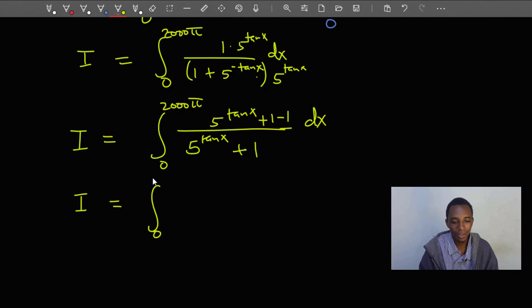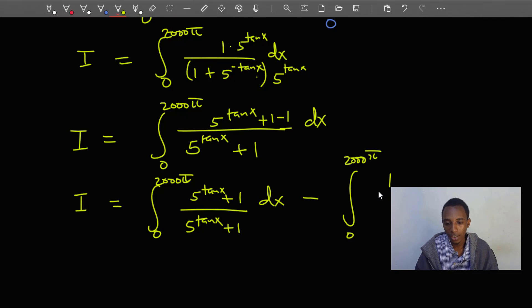So I equals the integral from 0 to 2000π. This is now going to be 5 to the power tan x plus 1 divided by 5 to the power tan x plus 1 dx.